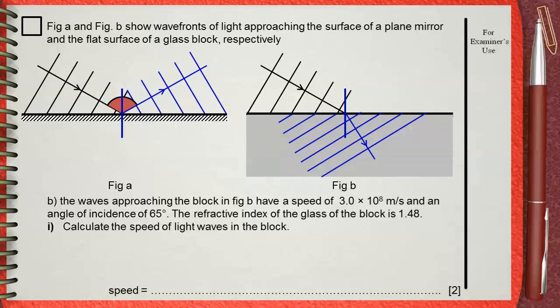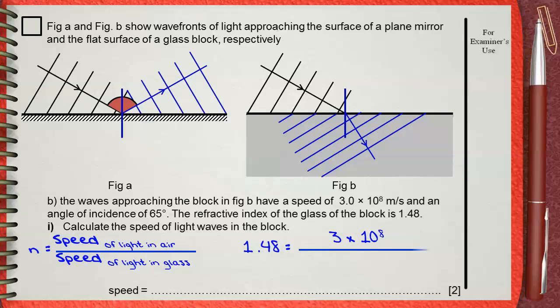We have a rule which is: refractive index n equals speed of light in air divided by the speed of light in glass, which is our denser medium. This leads to 1.48 equals 3 times 10 to the power of 8 divided by the speed of light in glass.